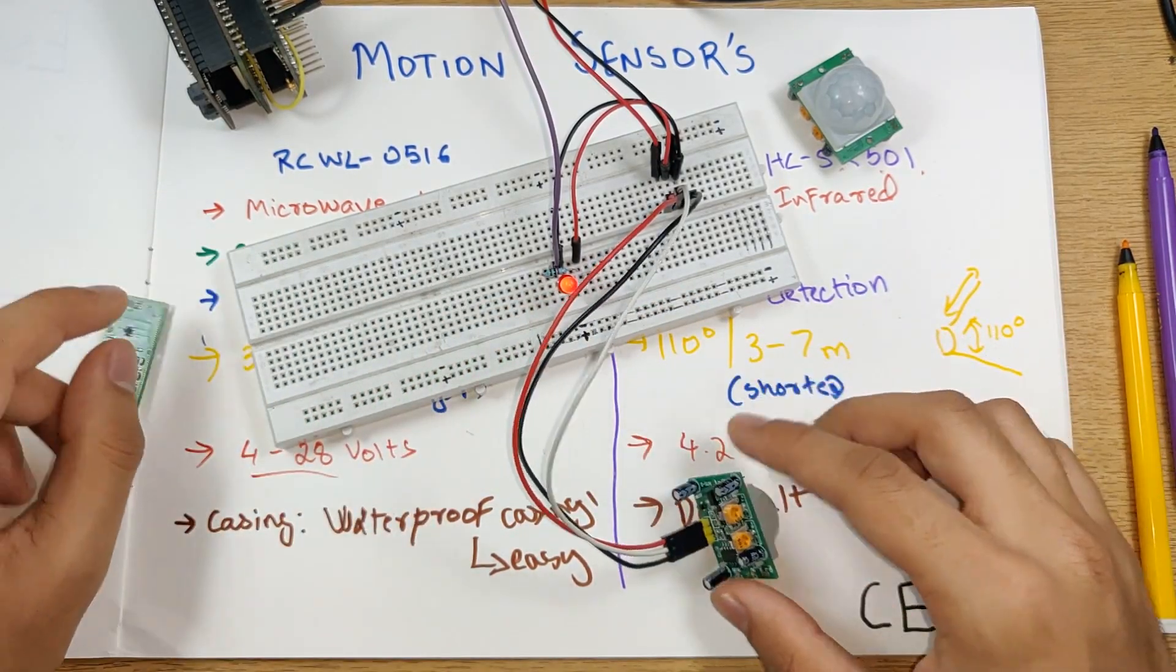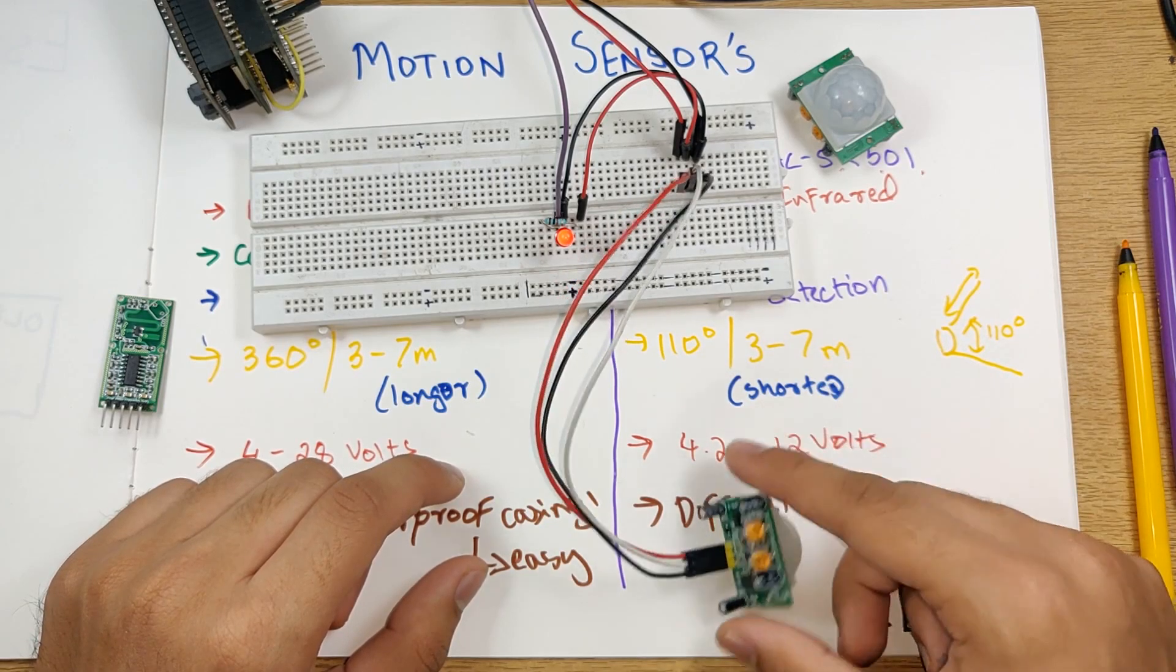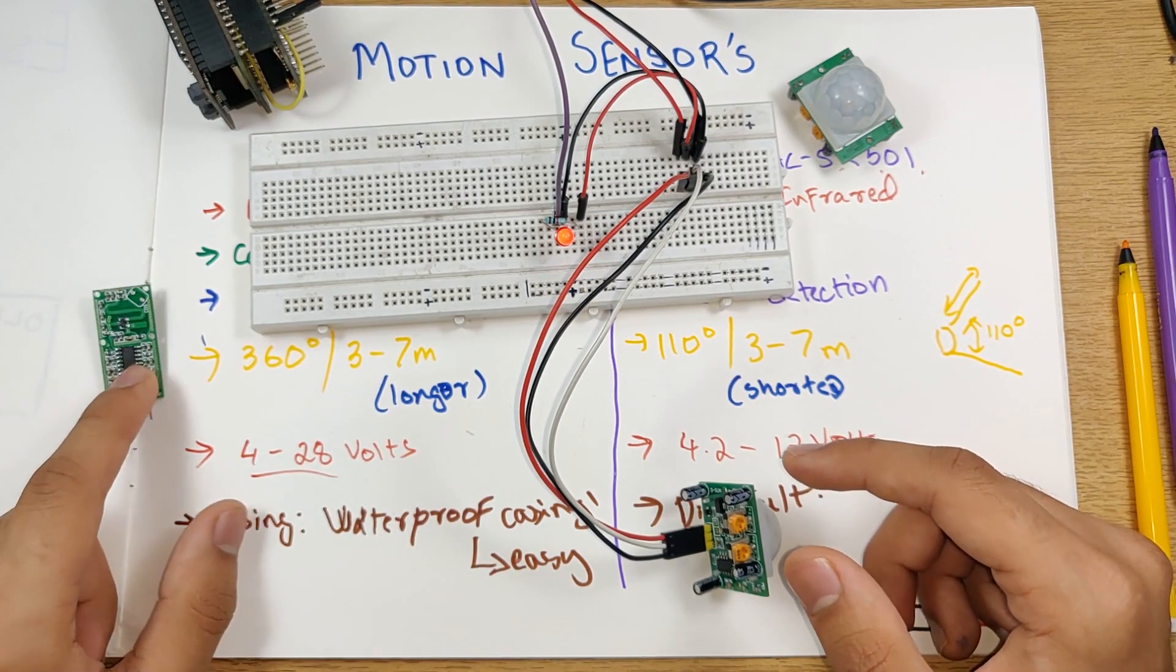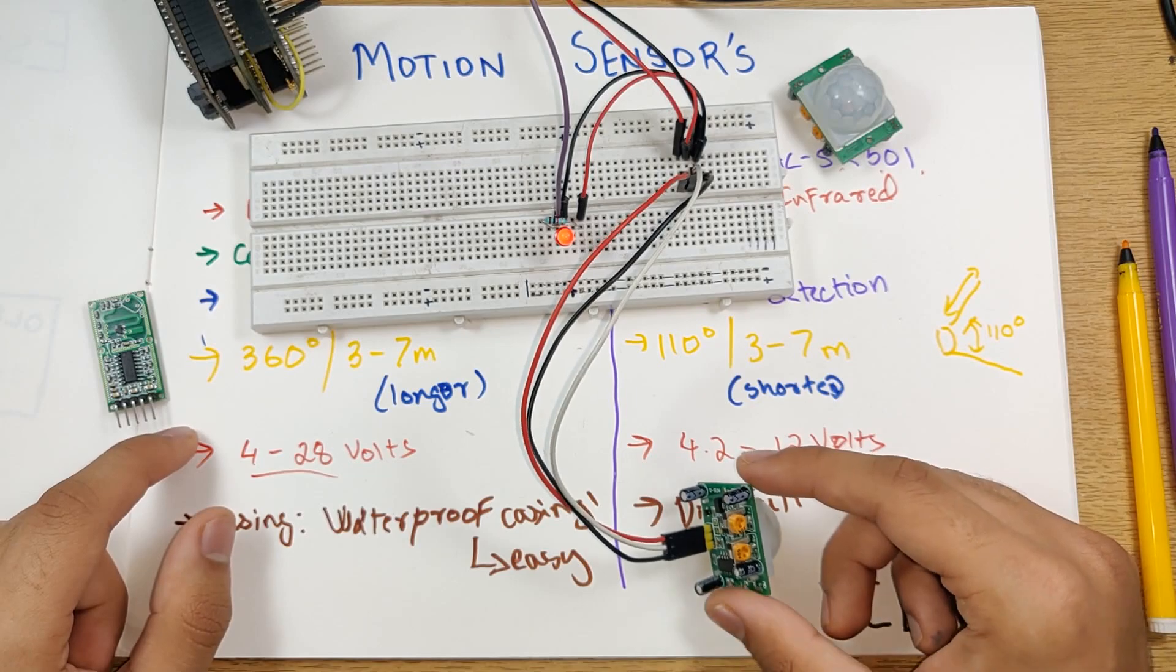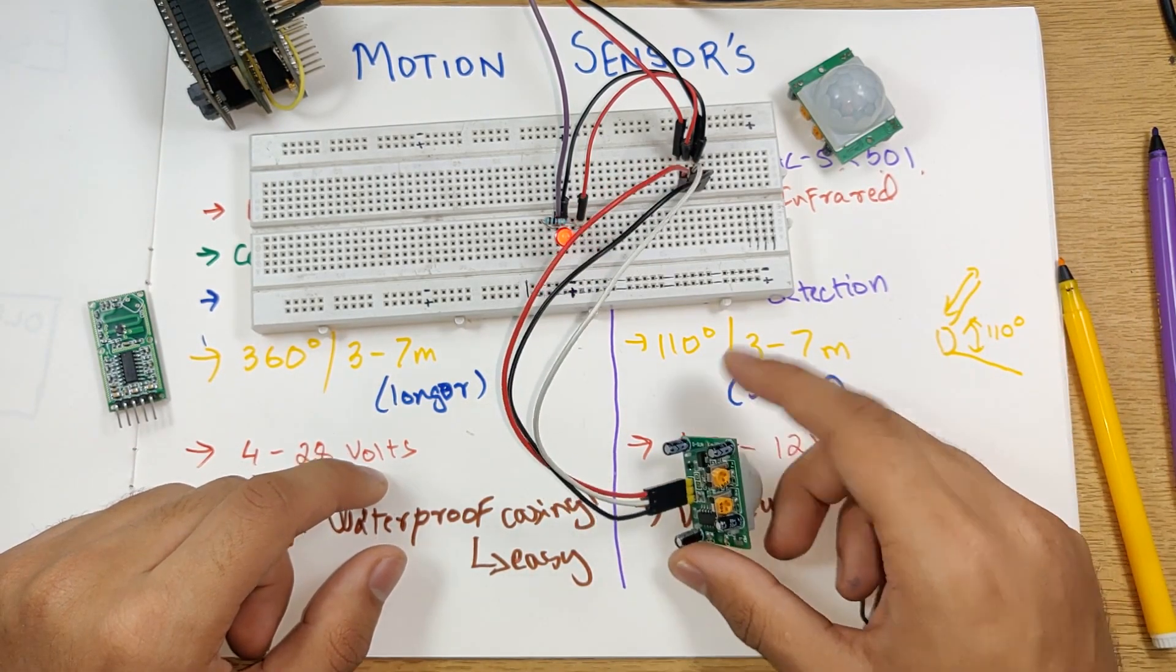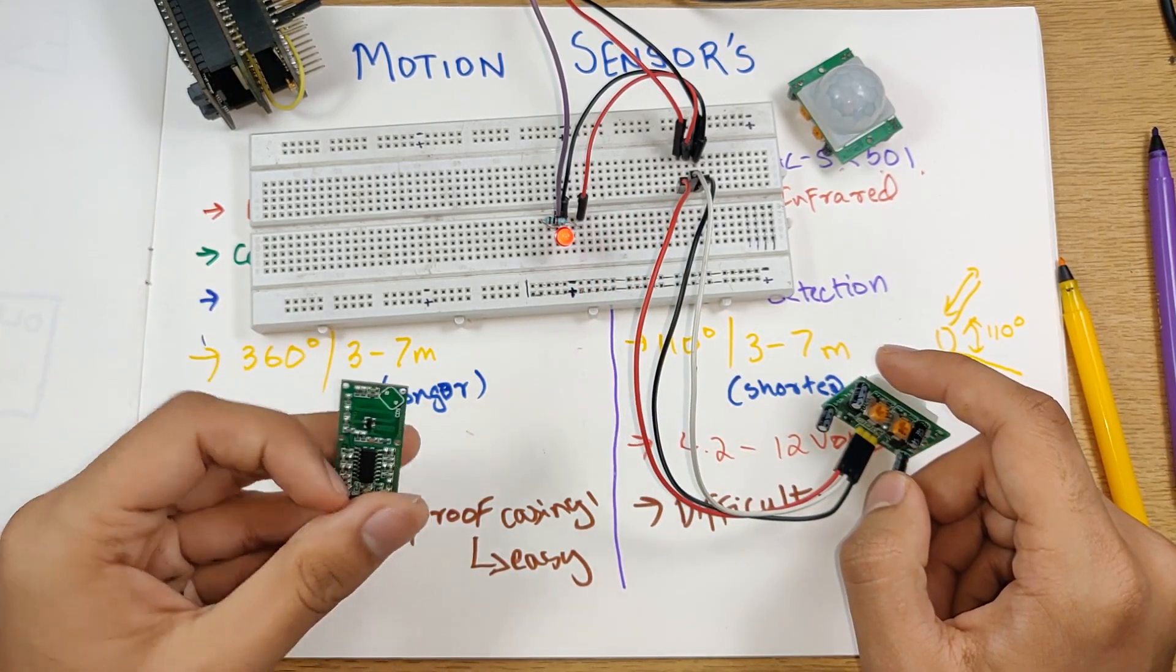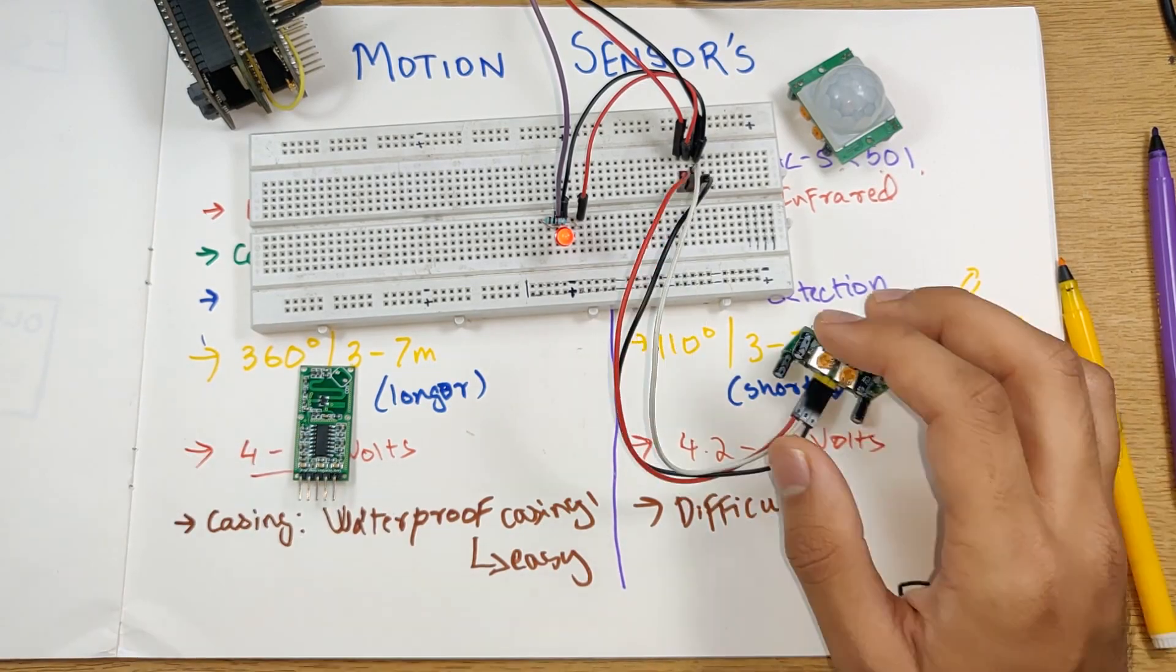Yes, it does perform better in ranges less than three meters than the microwave sensor. As I said, if you're going for shorter ranges prefer this one. If you're going for longer ranges prefer this one. And also depending on the angle that you want detection in - if it's directional then use the PIR sensor, if it's a 360 type of thing then use this microwave sensor.